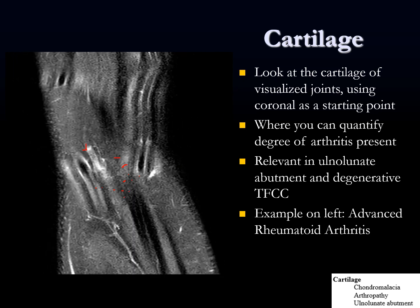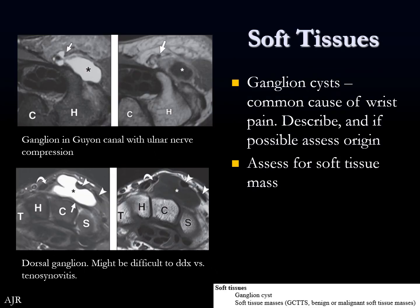Soft tissues — ganglion cysts are a common cause of wrist pain, so we're always looking for masses. I tend to do that towards the end, looking for soft tissue masses, especially ganglion cysts. If I see a ganglion cyst, I like to measure it, describe it, and if I can, say where it's coming from — because ganglion cysts typically have a communication with the joint space or other source. Here's an example of a ganglion in Guyon's canal with ulnar nerve compression, and here's an example of a dorsal ganglion.